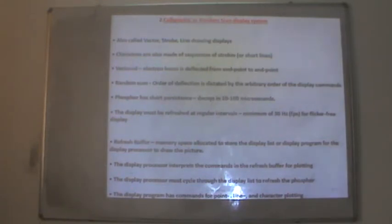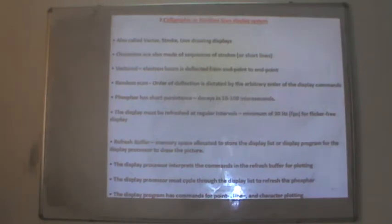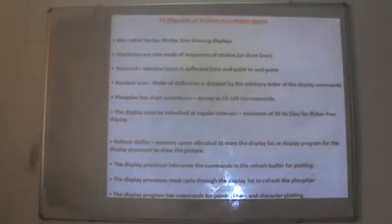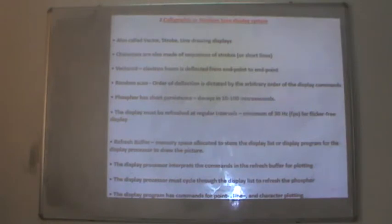Random scan systems, the second variety of display systems, are also called vector, stroke or line-drawing displays. Characters are made of sequences of strokes or short lines. The electron beam is deflected from one endpoint to the other in an arbitrary order directed by display commands. Phosphor persistence decays in 10 to 100 microseconds. Displays must be refreshed at regular intervals with a minimum of 30 Hz for flicker-free display. The refresh buffer stores the display list or display program for the display processor.